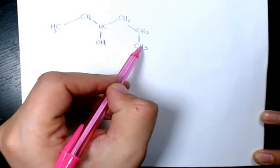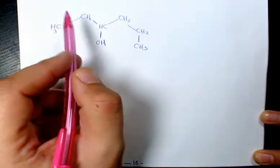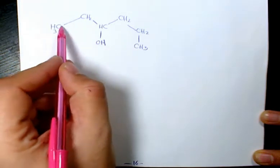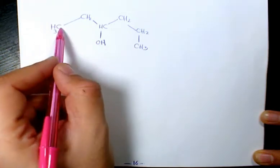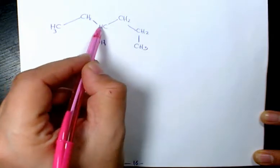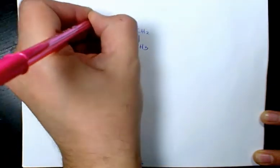We start naming it. We can start from here or here, but we must start from this side because when you start from this side the hydroxyl radical gets the lowest number. So that's going to be one, two, three